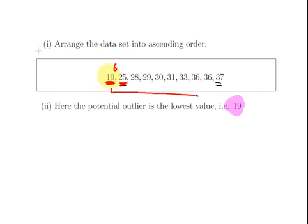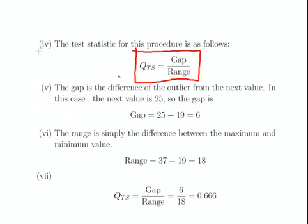Now, the range is the other value here. It is the difference between the lowest value and the highest value. And that here is 37 minus 19, that is 18. So the gap there is 6. The lowest value, or the outlier, and the absolute value of the distance to the next point. And the range is simply the range.